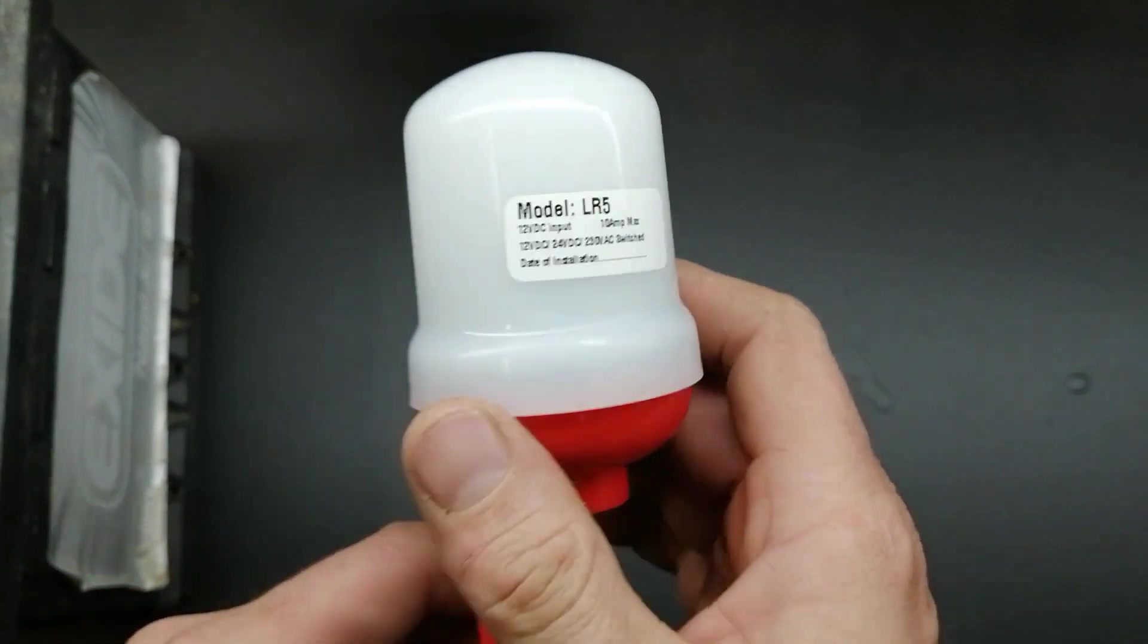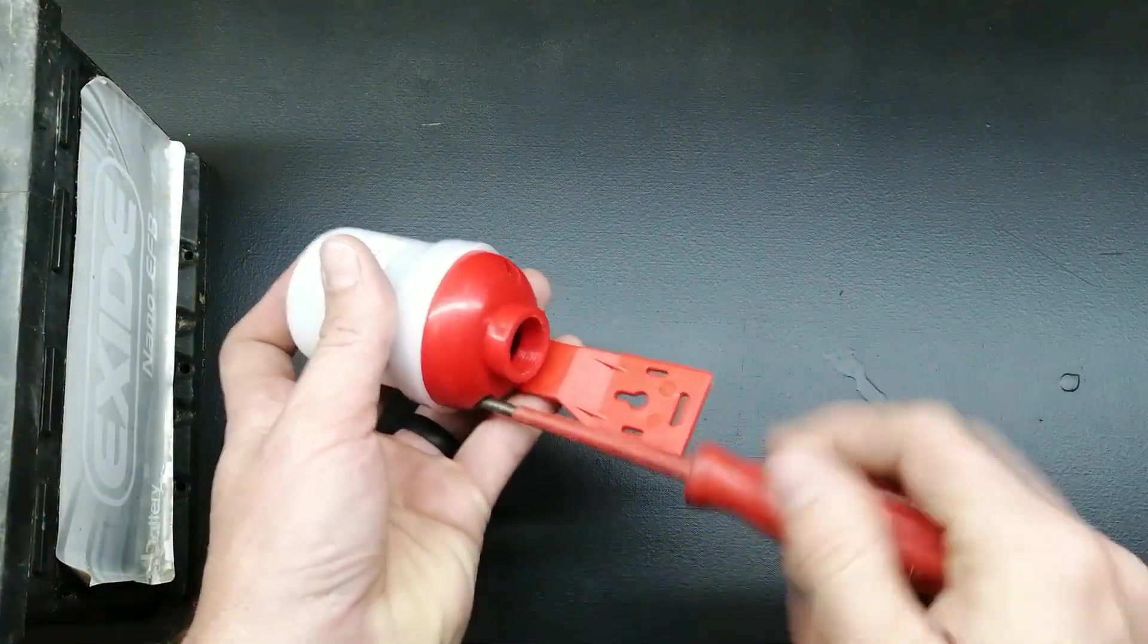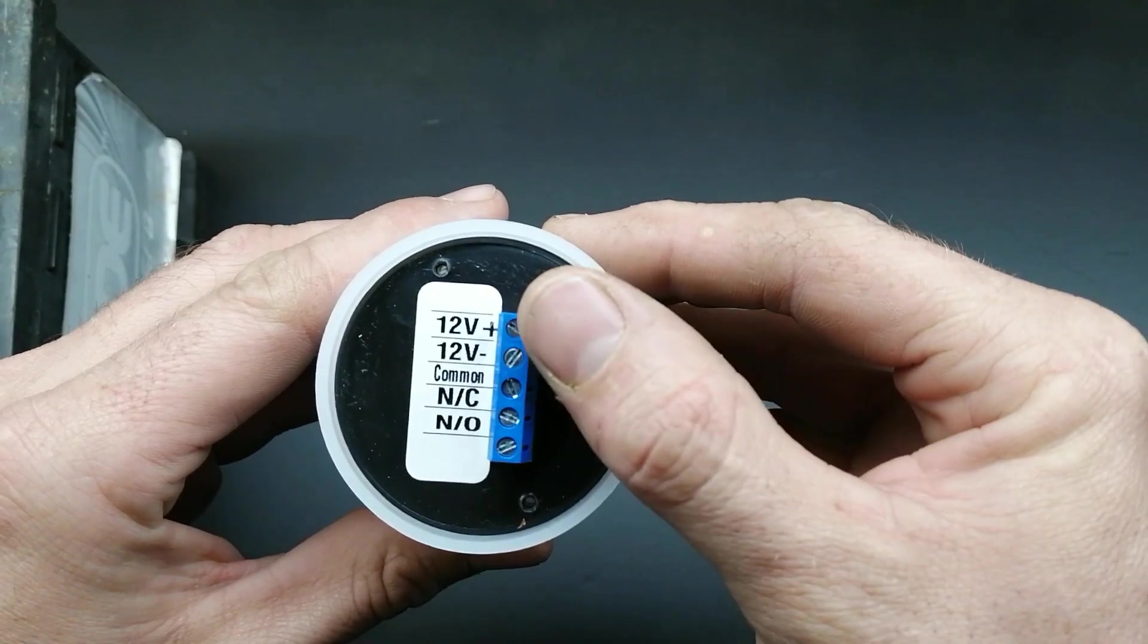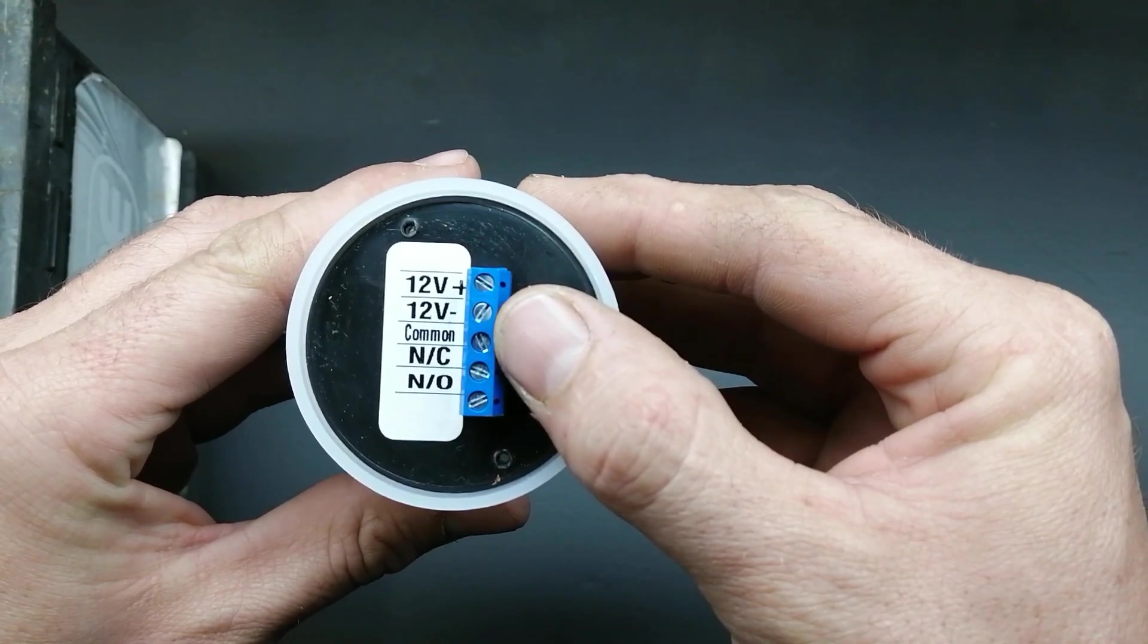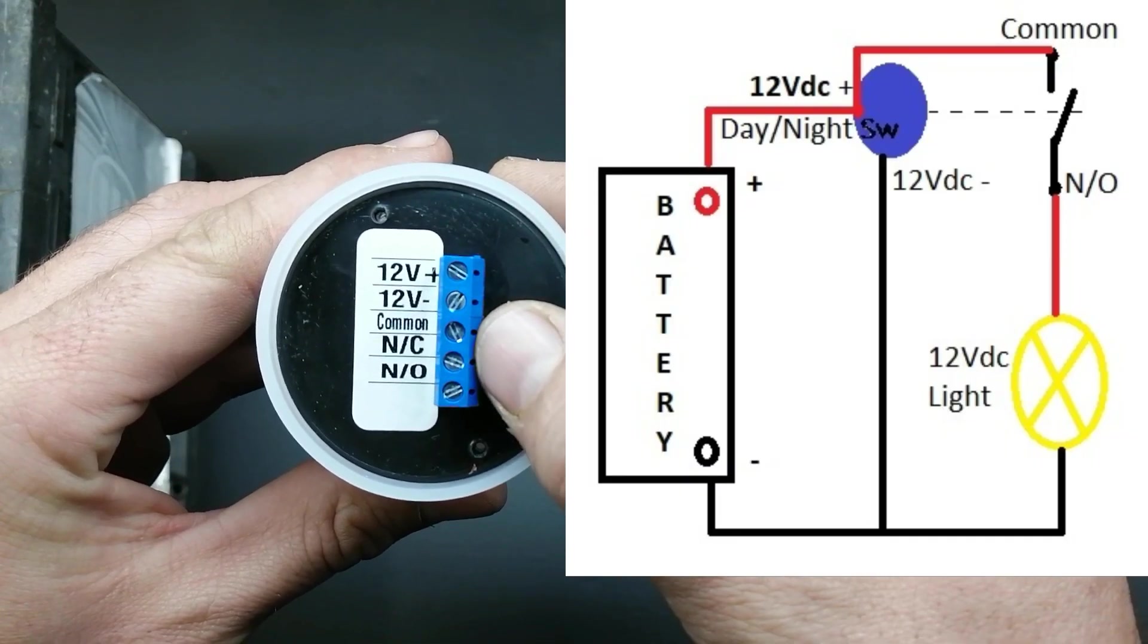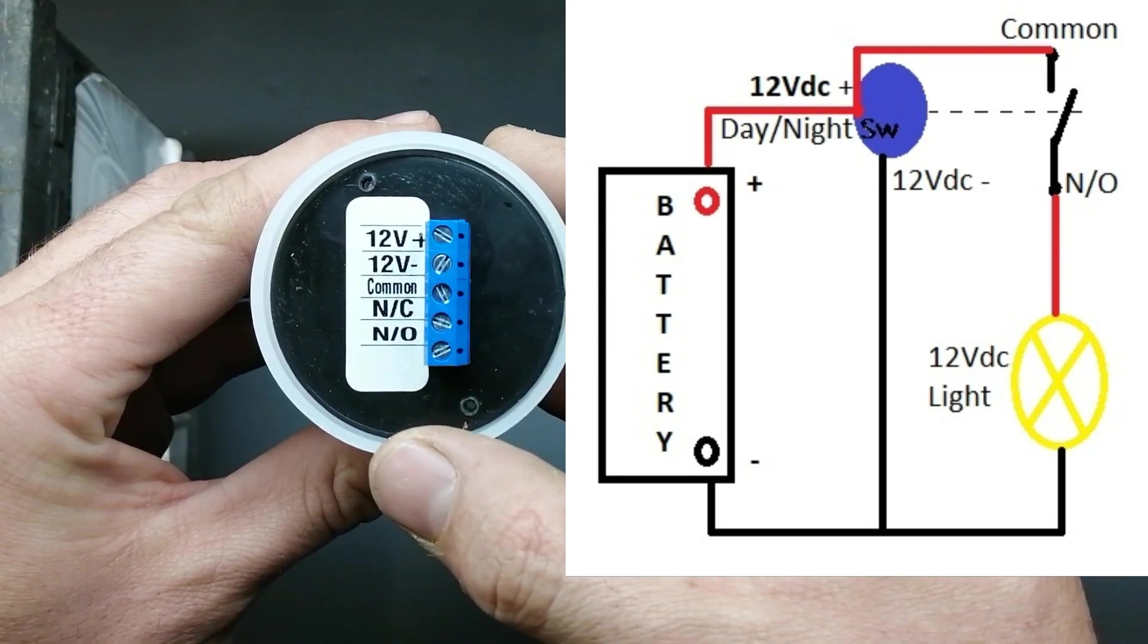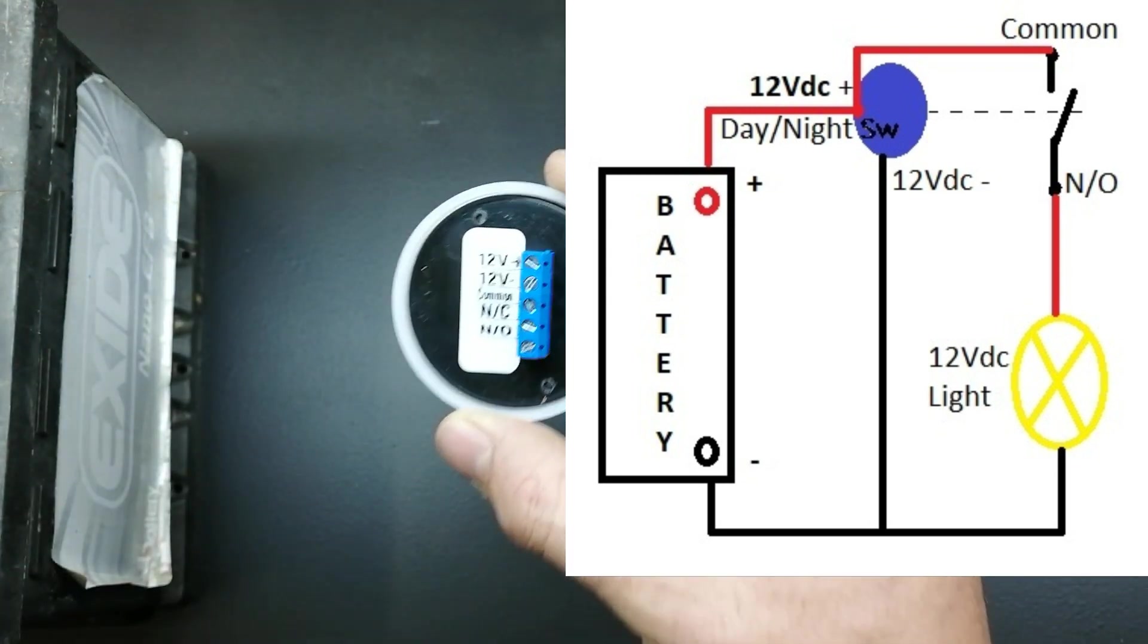Okay, let's get started. So in here you can see the connections. Positive, negative, 12V DC for the top two. Then the common, normally closed and normally open. That's where it actually differs from the normal 230V ones. I'm going to put a diagram up here so you can see how to wire this thing. So let me show you wire for wire what we're going to do.